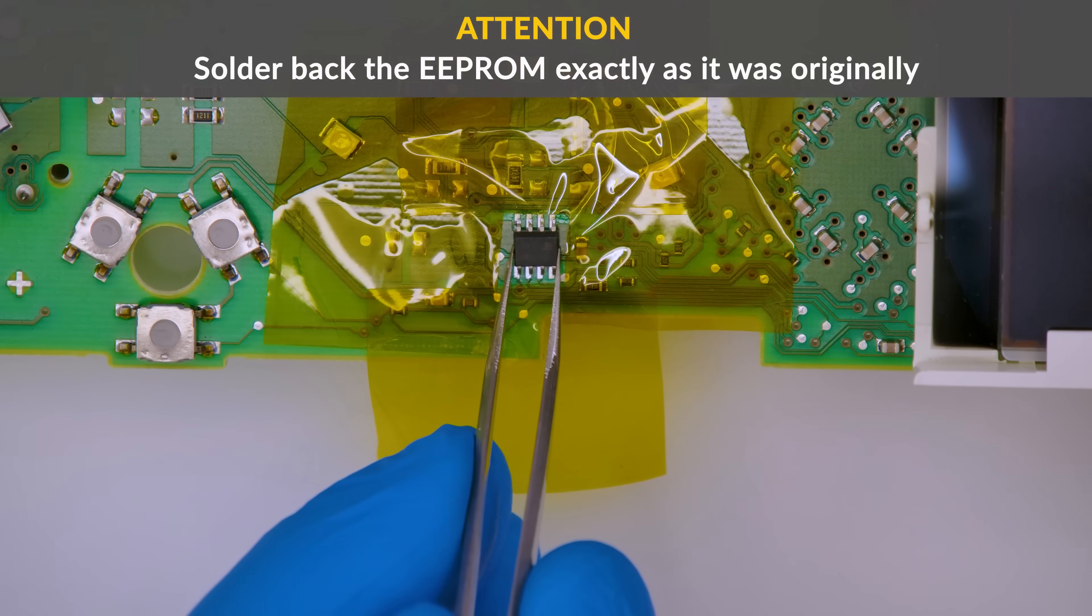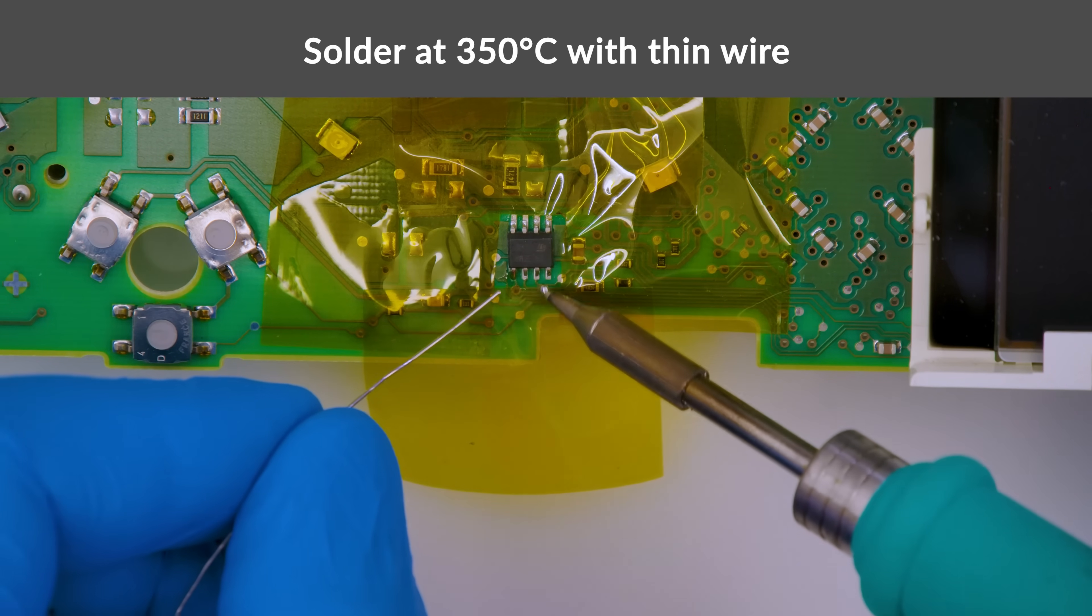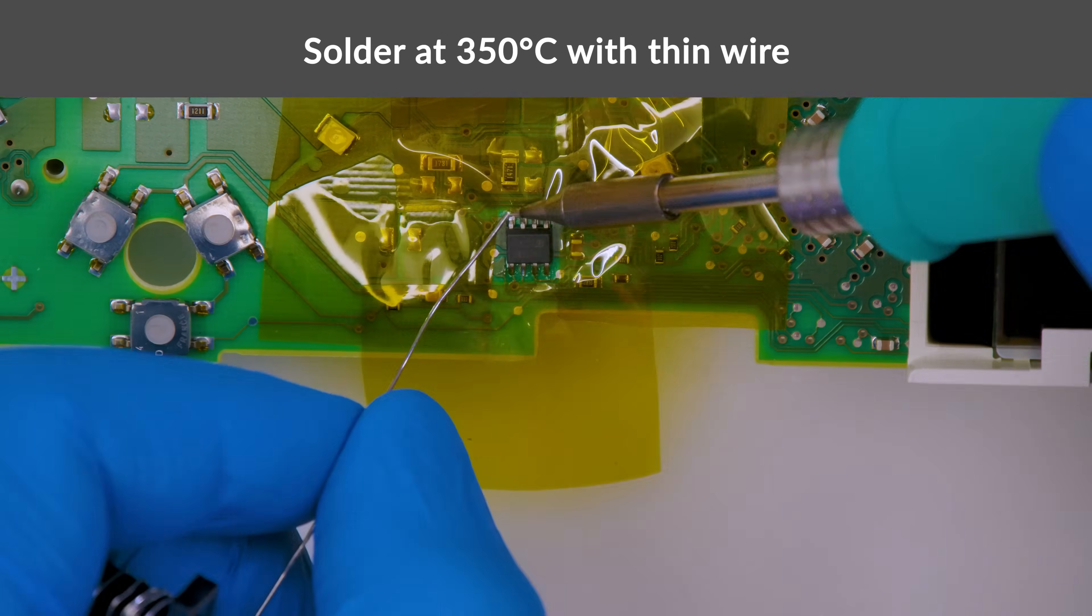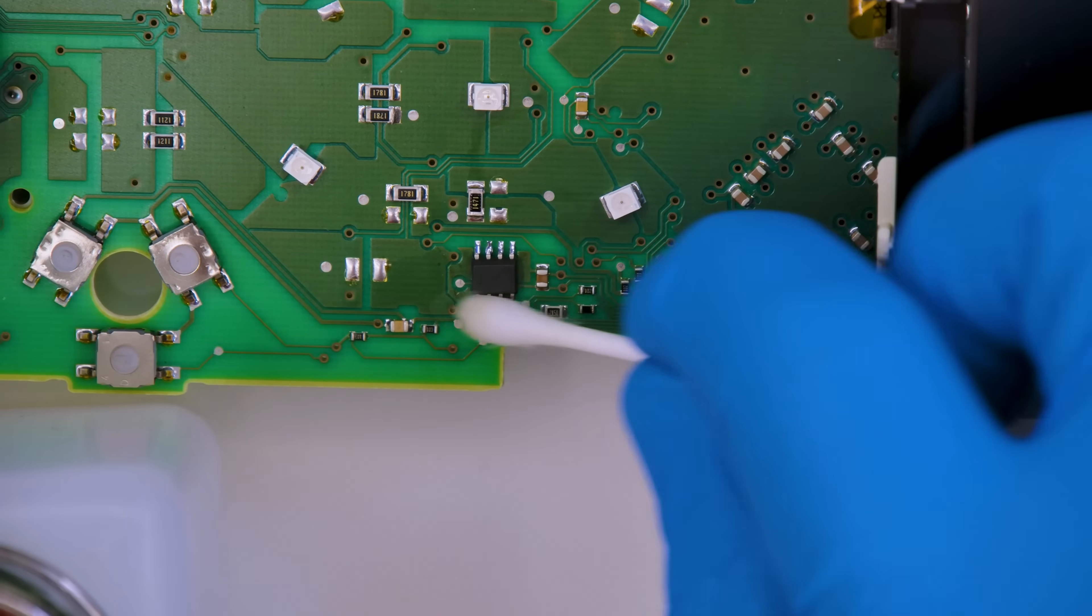With the tweezers, position the EEPROM on the PCB as it was originally and solder it using a soldering iron with conical tip at 350 degrees. Remove the kapton tape and clean again with some solvent.